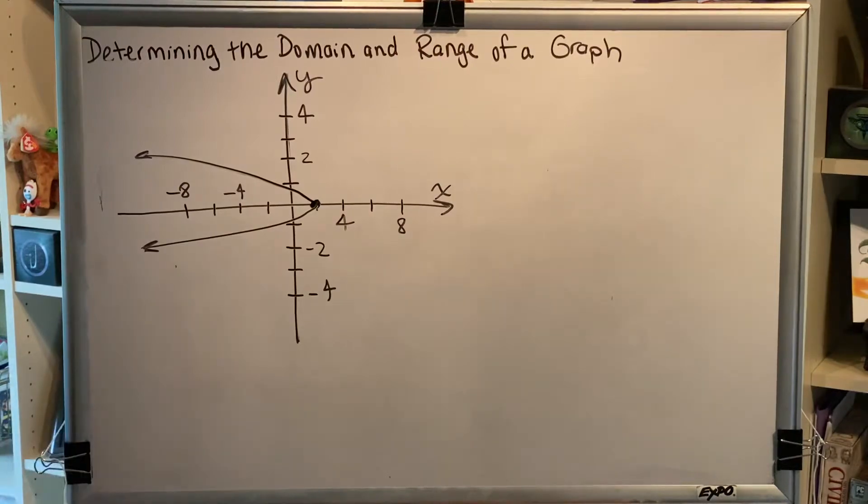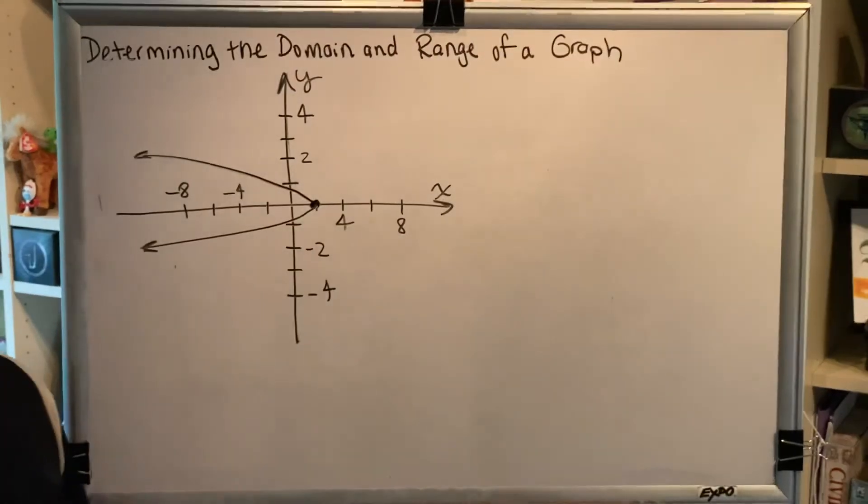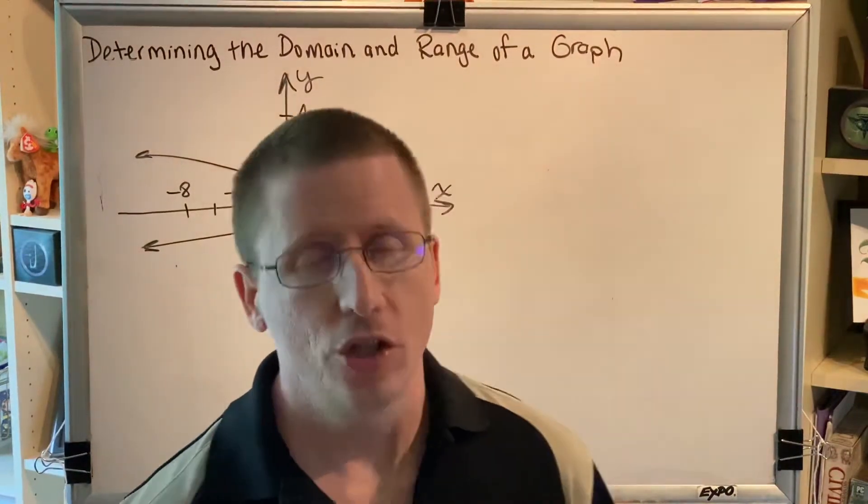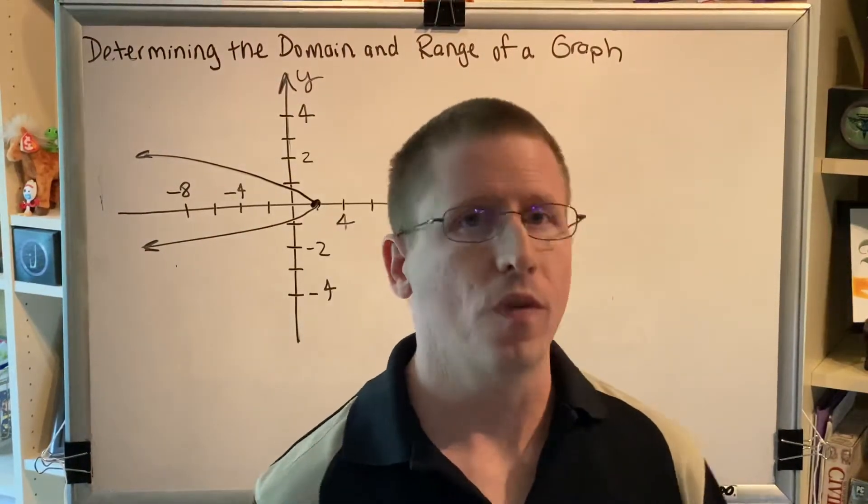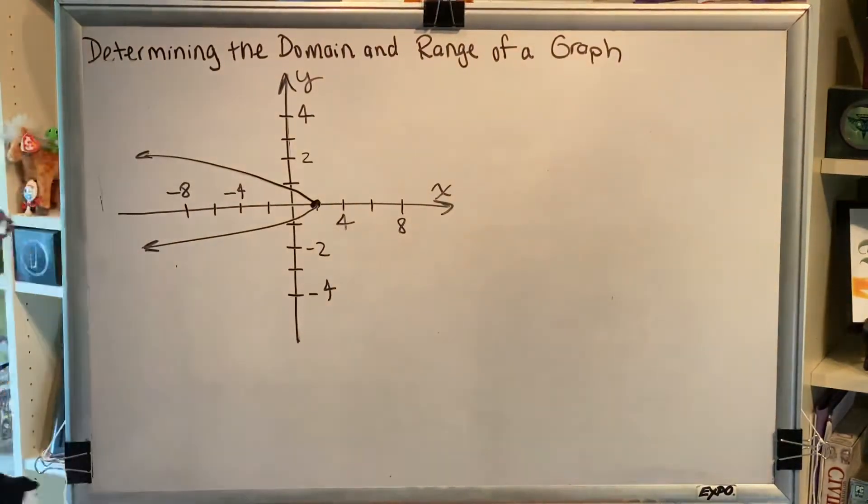So something that I'd like to point out right from the beginning is this is not a function. It fails the vertical line test, so this is just a relation. We're finding the domain and range of this relation.